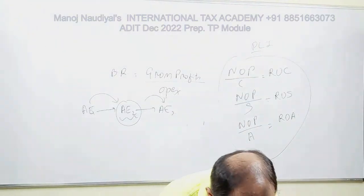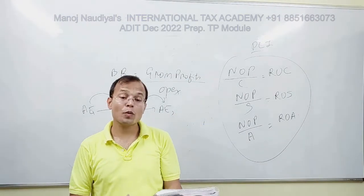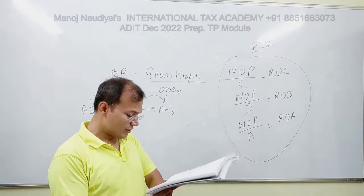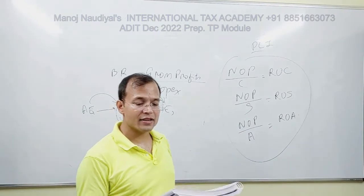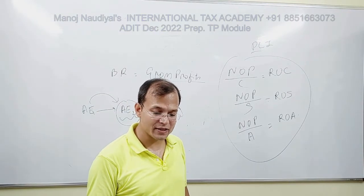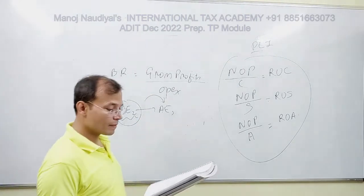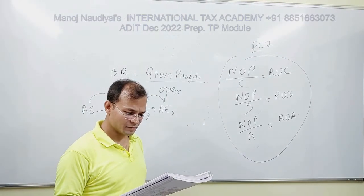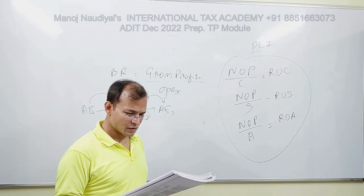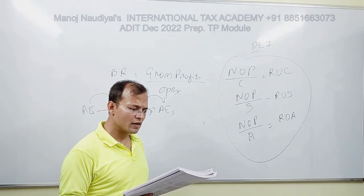Paragraph 2.106: Berry Ratio is defined as the ratio of gross profit to operating expenses — gross profit to operating expenses. Interest and extraneous income are generally excluded from the gross profit determination, as we know.